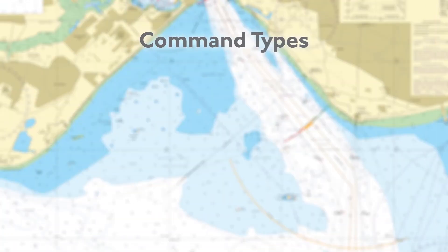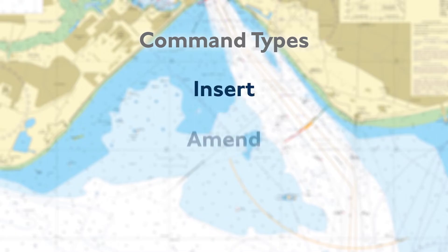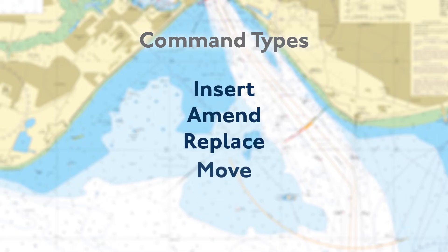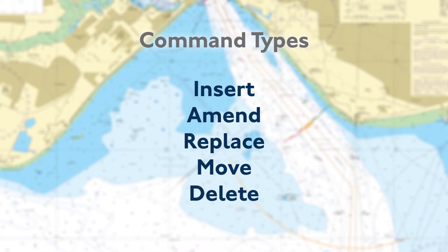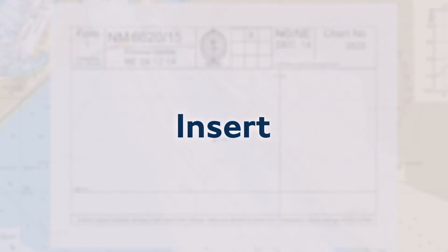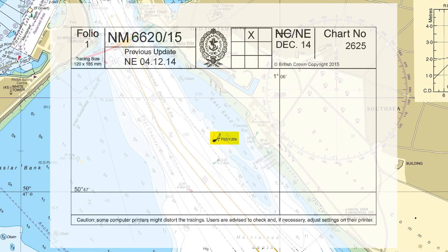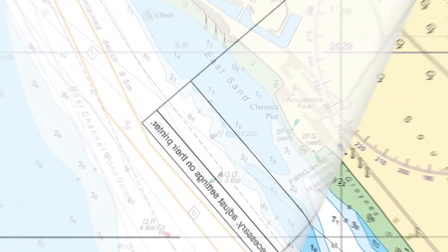There are five command types to follow when updating a chart. These are Insert, Amend, Replace, Move, and Delete. Insert is used for inserting all new information.